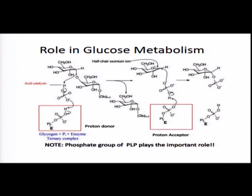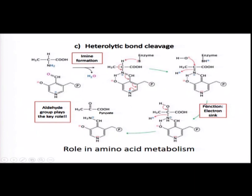In glucose metabolism, the enzyme does not exploit the reactive aldehyde group of PLP but utilizes only the phosphate group to perform the reaction. The acid catalysis involves a proton donor where enzyme-bound PLP facilitates a cleavage reaction. As more glycogen is cleaved, more energy can be realized. There is also the example of hemine formation, where the enzyme-bound PLP acts as an electron sink, carrying out the reaction in this heterolytic bond cleavage process.